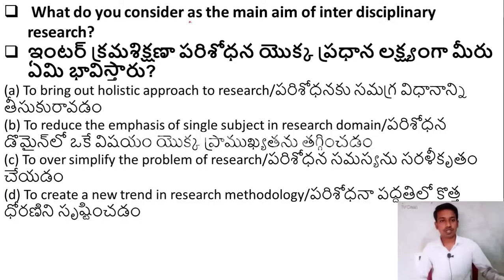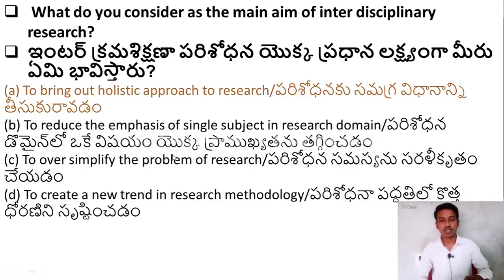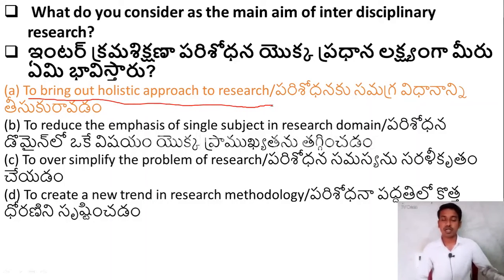Let us move to the next question. What do you consider as the main aim of interdisciplinary research? Option A — to bring out a holistic approach to research; Option B — to reduce the emphasis of a single subject in the research domain; Option C — to oversimplify the problem of research; Option D — to create a new trend in research methodology. The right answer is Option A — to bring out a holistic approach to research.